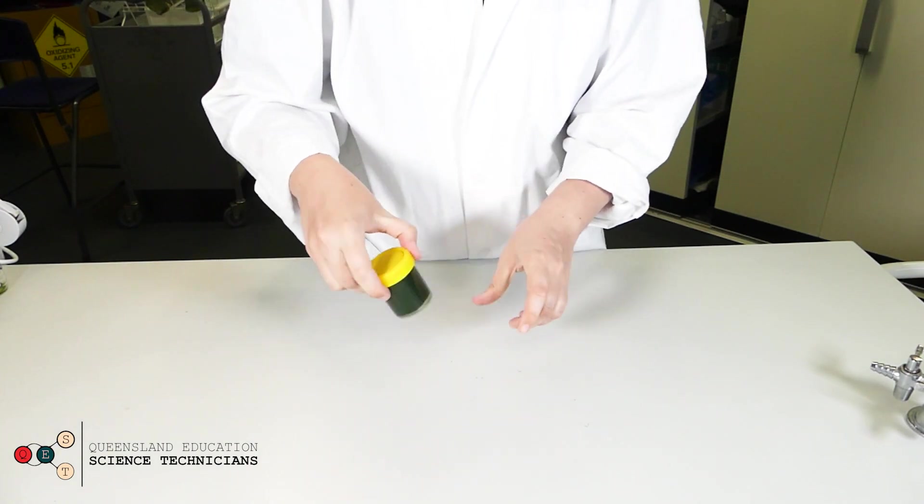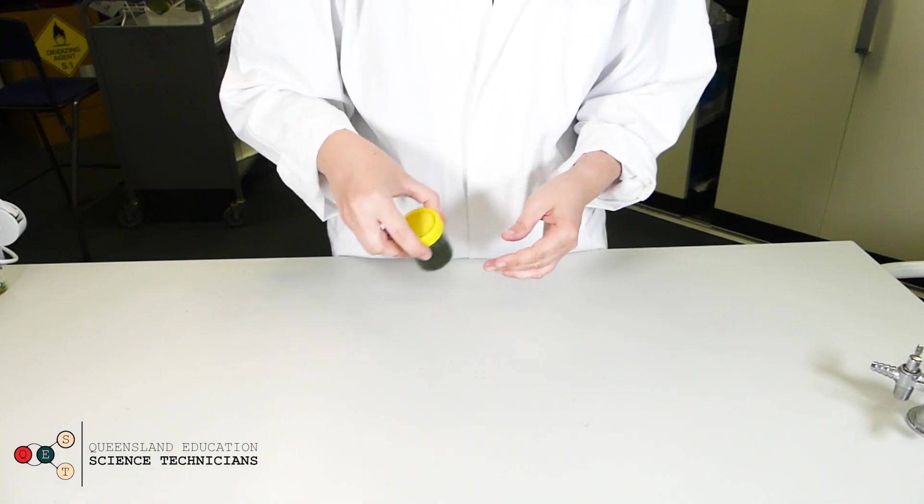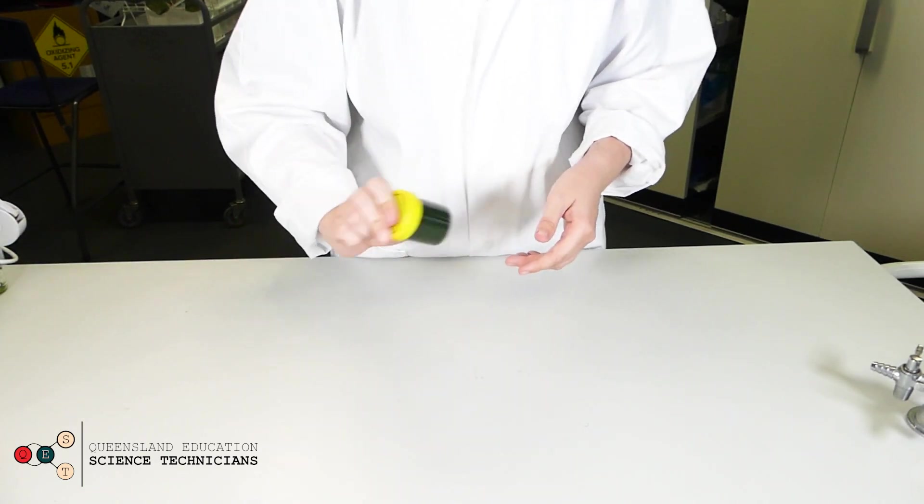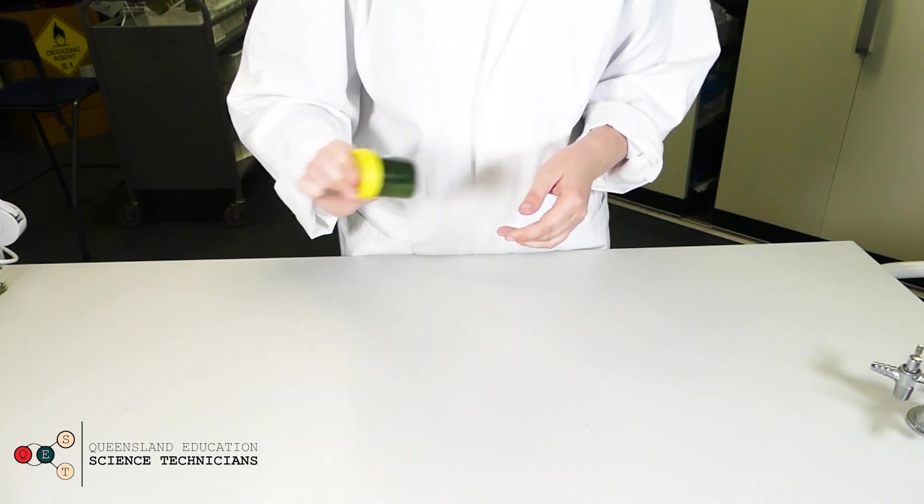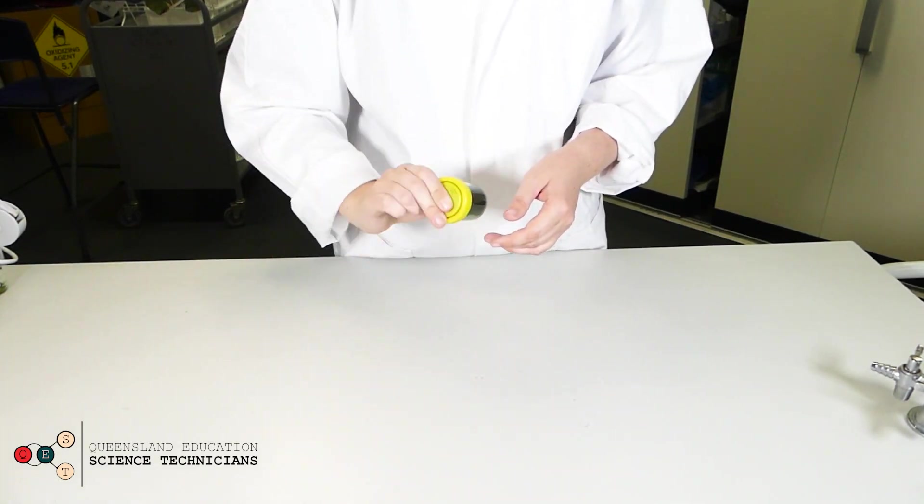Screw the lid on tightly and give the specimen jar a really good shake until you have a nice homogenous solution of algae or algal culture and sodium alginate.